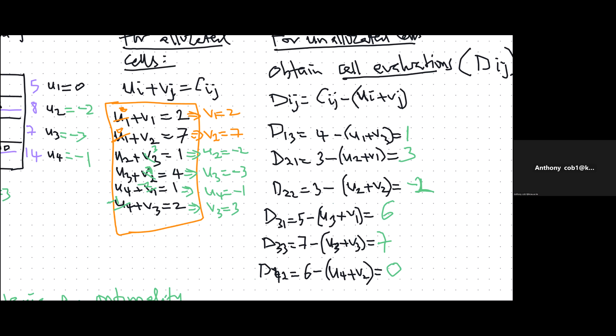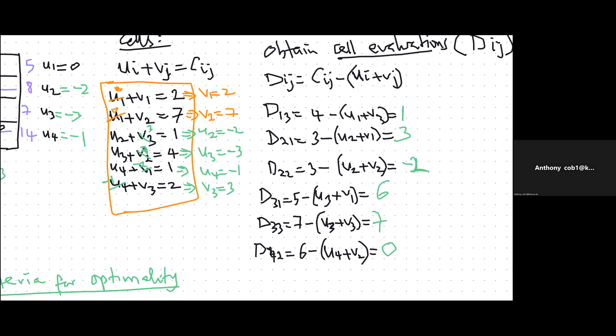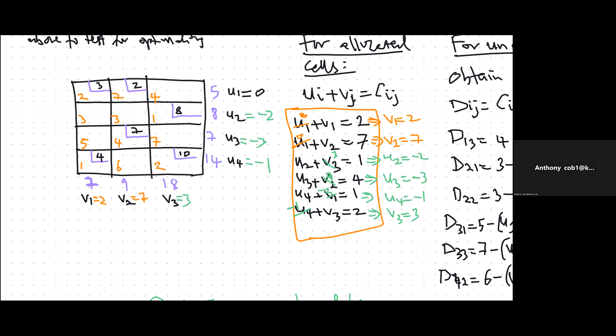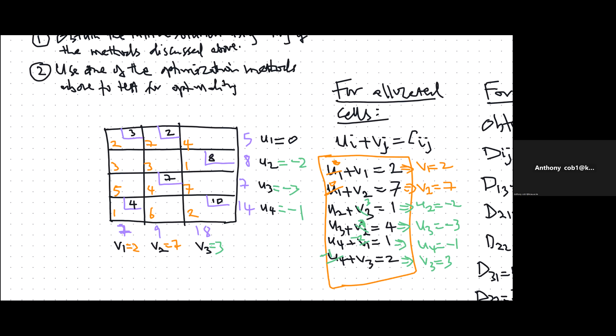Looking at our Dij values, we have D22 equals minus 2, which is negative. So our solution is not optimal, meaning the cost obtained using Vogel's approximation method is not the best cost — we could lower it. If there are several negative values, we identify the most negative cell. In our case, D22 is the negative cell, so we earmark that cell for allocation.